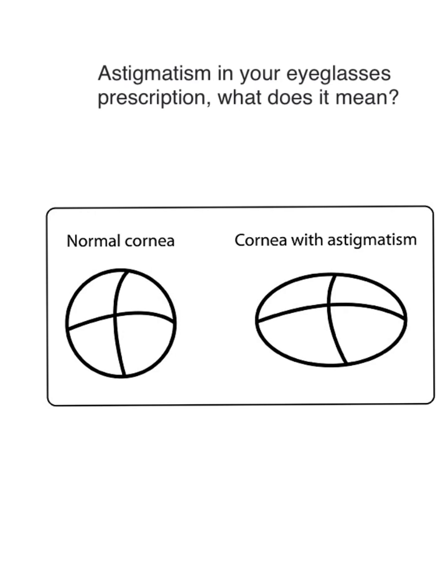In this video, I'm going to explain what astigmatism means in your eyeglass prescription. As you can see, in a normal cornea, the eye is shaped like a baseball — it's uniformly round.